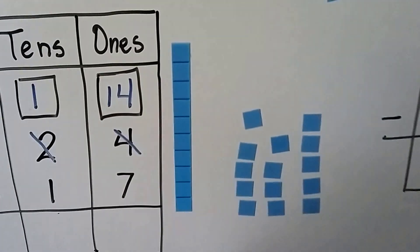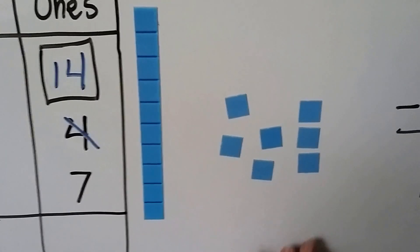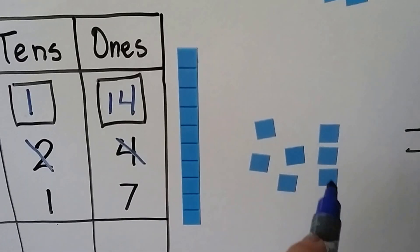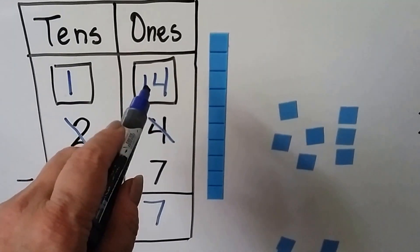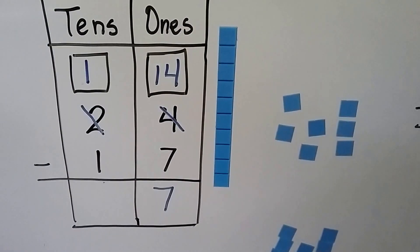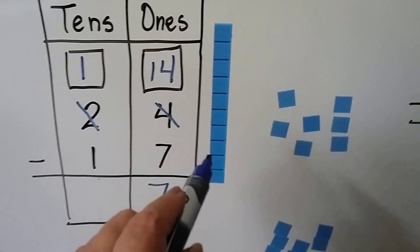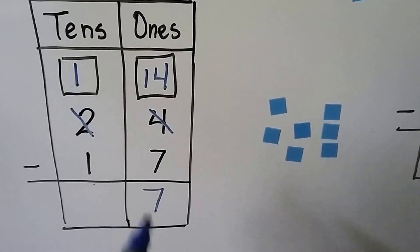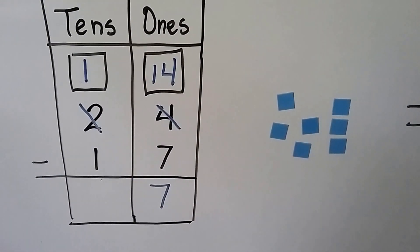Now we can take 7 away from 14. That's going to leave 7 ones. 7 plus 7 is 14, so 14 minus 7 equals 7. Now on this side, we have 1 ten minus 1 ten, so we need to take that 1 ten away. We take that 1 ten away and all we're left with is the 7 ones. 24 minus 17 equals 7.